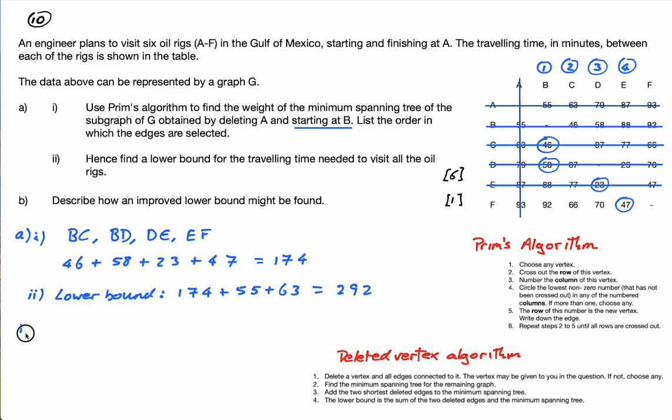And finally part B, he says describe how an improved lower bound might be found. Well, for lower bounds we focus on the deleted vertex algorithm, so the only other way to improve it that we are aware of is to choose a different vertex to delete at the start. So we'll say delete a different vertex.